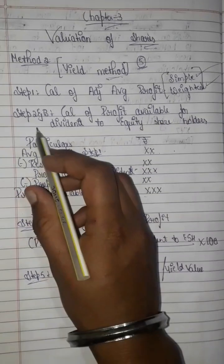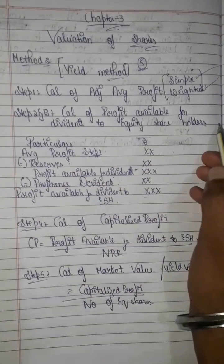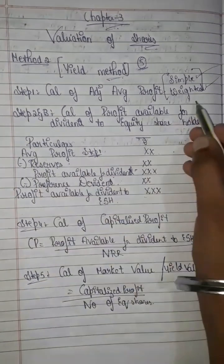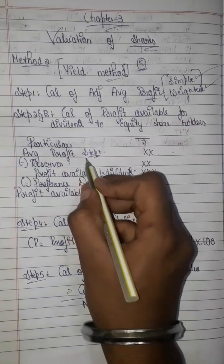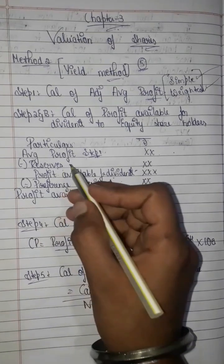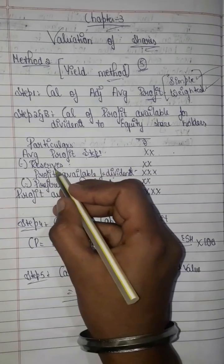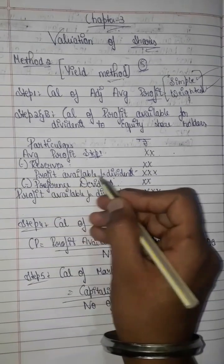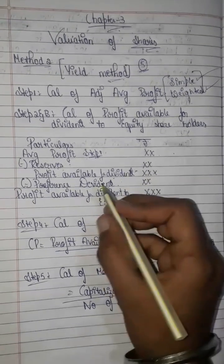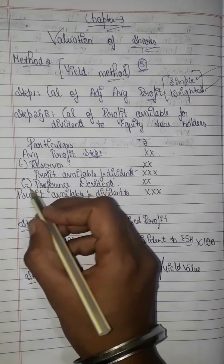Step 2 and step 3 is the calculation of profit available for dividends to equity shareholders. From the adjusted profit, we deduct expenses. If there is a minus mark from deductions, we arrive at the profits available for dividends to shareholders. We then deduct the preference dividend to get the final profit available for equity shareholders.